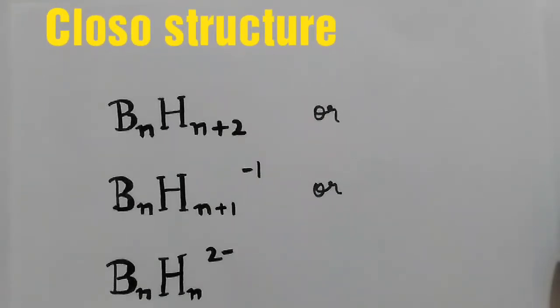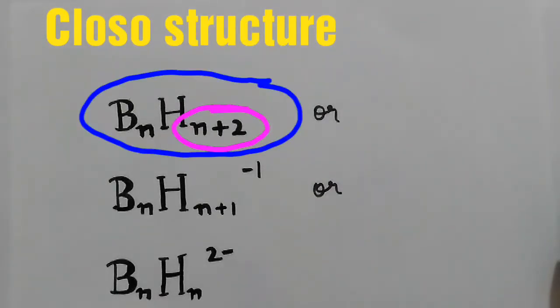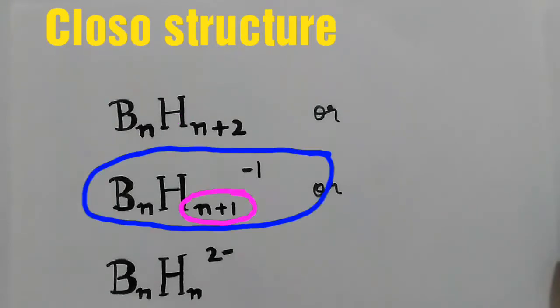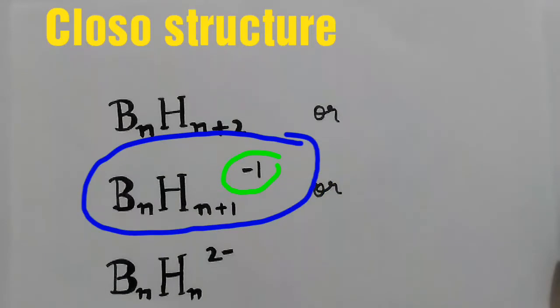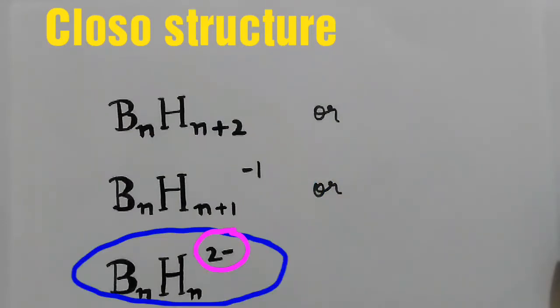In order to check whether the given cluster geometry is closo or not, you need to check these three formulae: BnHn+2 or BnHn+1 with a negative charge, or BnHn with negative 2 charge.